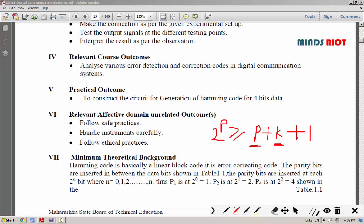Here we are using 4 bits of data. Therefore, k will be equal to 4. Therefore, 4 plus 1 equals 5. Now, the condition will become 2 to the power p greater than or equal to p plus 5.